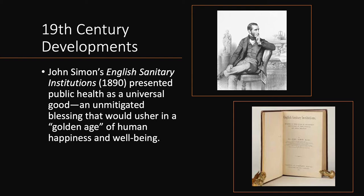These trends continued into the 19th century, when a number of public health specialists published books recounting the history of their own field. This kind of practitioner history was often undertaken to justify the author's own ideas. A prominent example is a book called English Sanitary Institutions, published in 1890 by John Simon, the first chief medical officer of the United Kingdom. Simon's book celebrates the creation of public health in Britain, and it was written so as to argue for the need to recognize this field as an important area of public service, one that the British government should institutionalize and support financially. Telling a story of scientific breakthroughs and continual progress over infectious disease, Simon believed that public health was an unmitigated good, one that would usher in a utopian age of mass health.